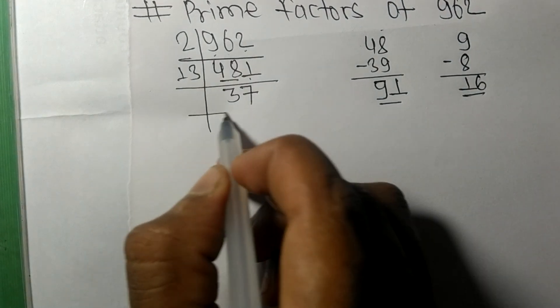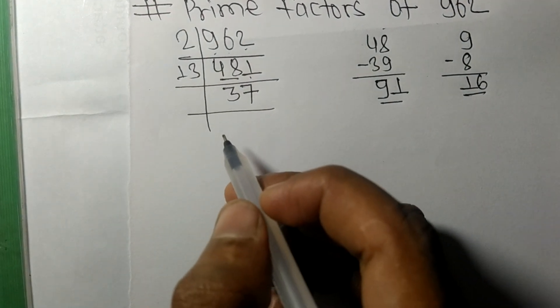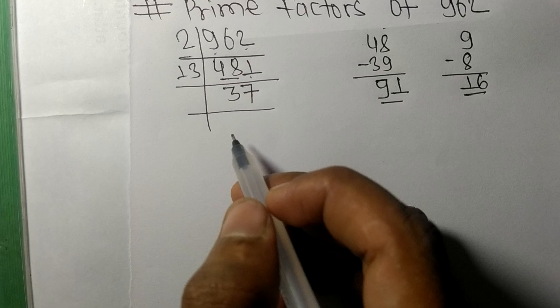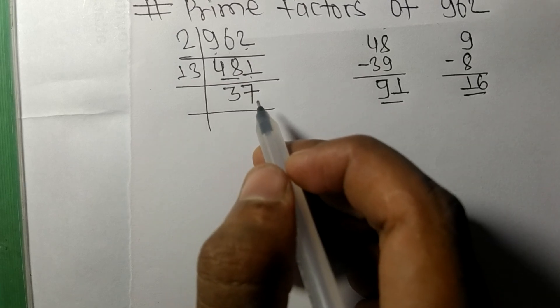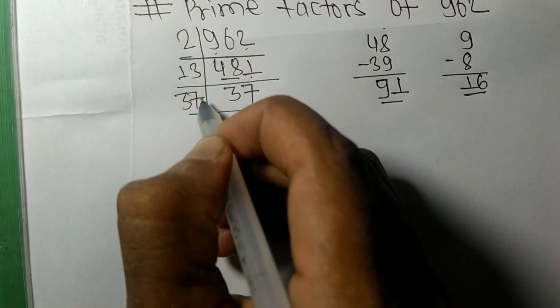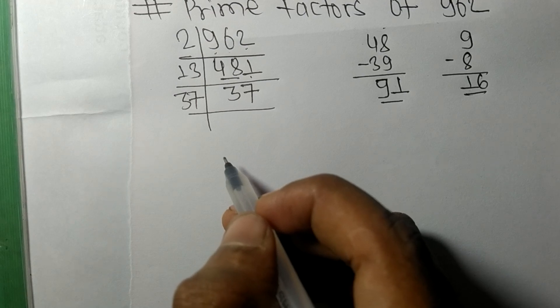Now we got 37, which is a prime number, so it's exactly divisible by 37 only. On dividing we get 1.